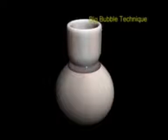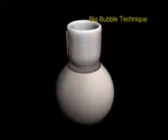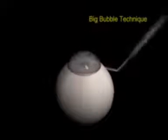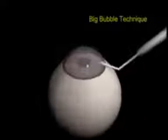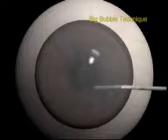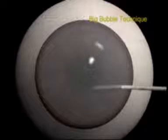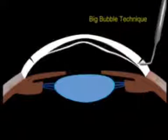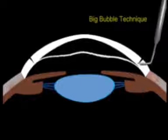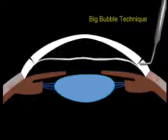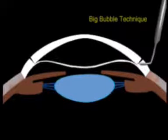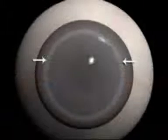First, partial thickness trefination of the cornea is performed, followed by injection of air into the corneal stroma at 80% depth using a 30-gauge needle. A large bubble of air collects, separating the Descemet's membrane from the stroma. The edge of this separation is visualized as a well-demarcated, dense white ring — the big bubble.